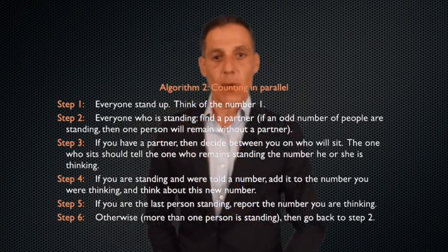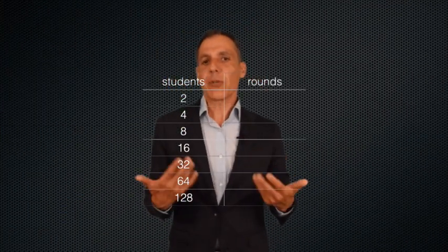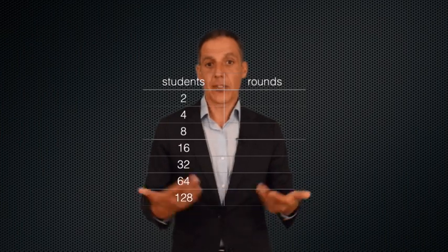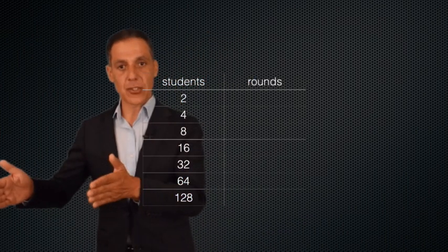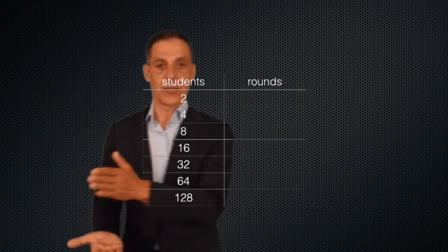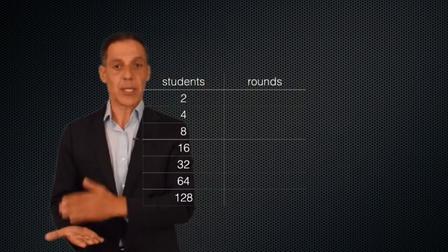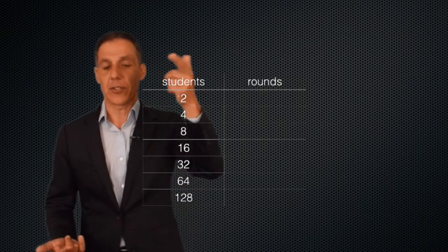So let's think about how much more efficient this is. What do I mean by efficiency? I mean, how long does it take? When I'm counting students sequentially, it takes one beat for every person. So if I have 100 people, I've got to count 100 times. If I've got 200 people, I've got to do 200 times, and so on.